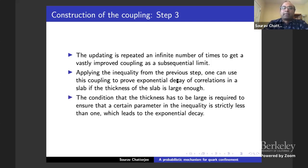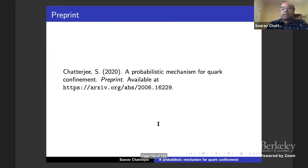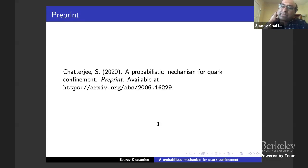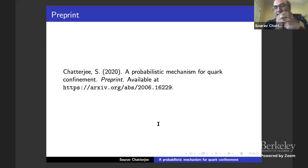The condition that the thickness has to be large is required to ensure that a certain parameter in this inequality is strictly less than one, which leads to exponential decay. That's about it. The paper is on arXiv and I'll be happy to answer questions. Thank you.